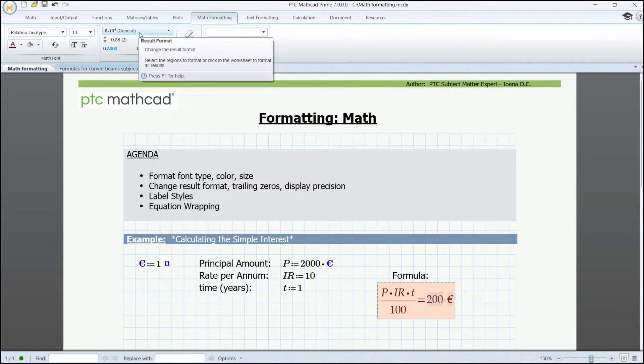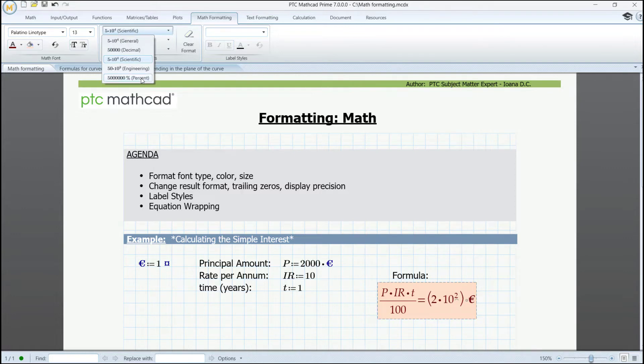To change the result format, we could transform it from general to decimal, scientific, engineering, or even percent, depending on what's more meaningful to our given problem. For now, we're going to leave it as general.